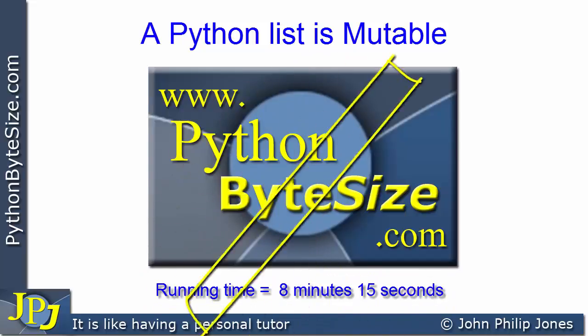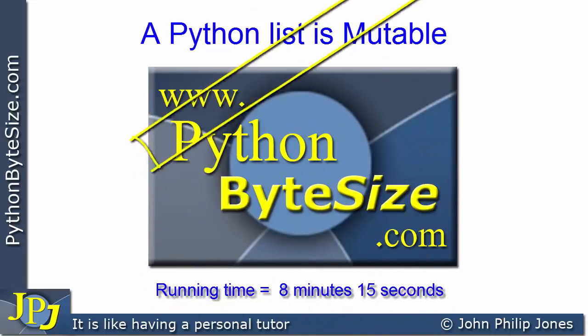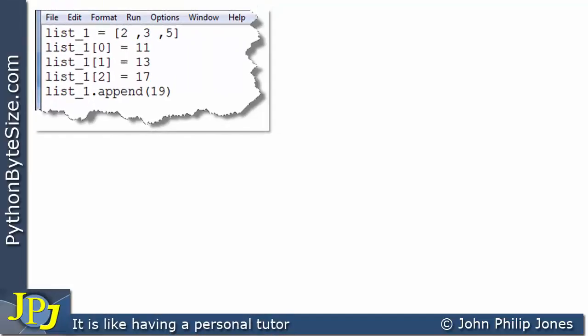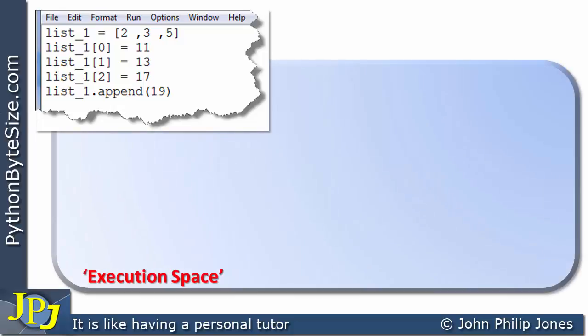In this video, we're going to look at the mutable nature of a list. Let's consider this computer program and model it using the execution space that I've shown many times throughout this playlist. When the program runs, we're going to get this execution space, and this first line is going to create a list.